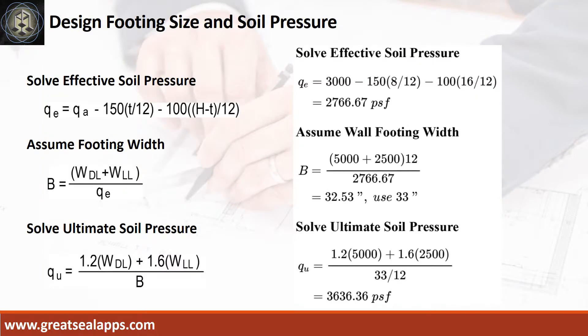Given allowable soil pressure equals 3,000 PSF, assumed footing depth equals 8 inches, and depth from natural grade line equals 2 feet, the effective soil pressure is 2,766.67 PSF.